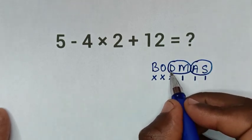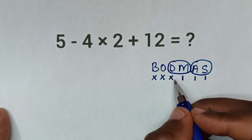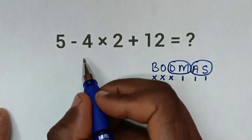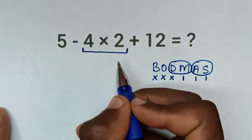From the division and multiplication group, we don't have division, so we have multiplication only. We deal with this multiplication of 4 times 2, which is 8.